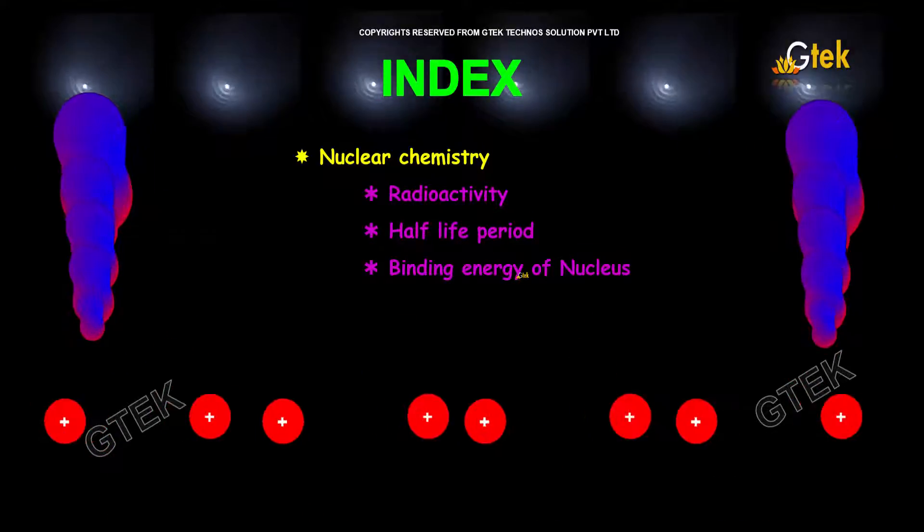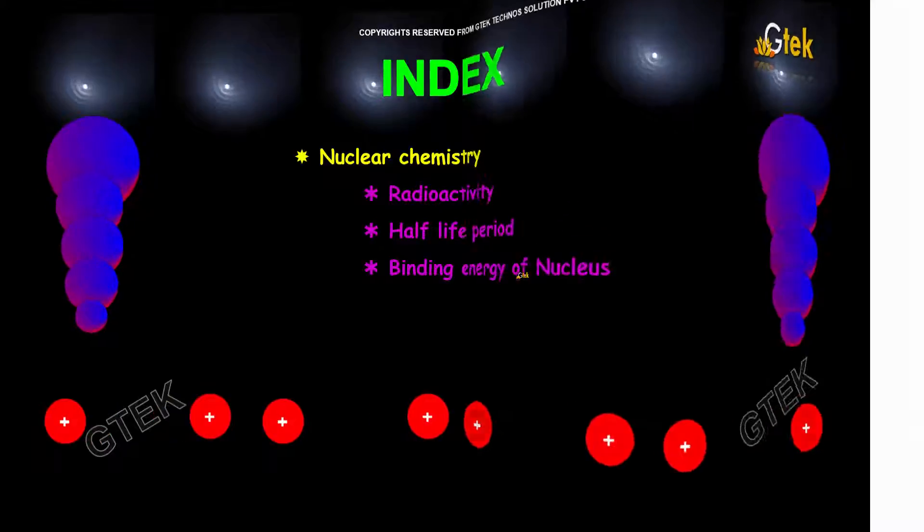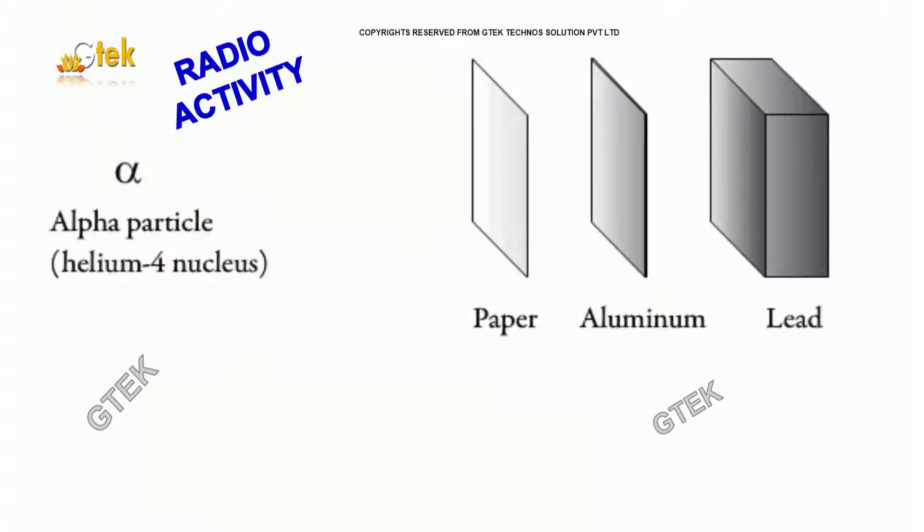These are the areas we are going to cover now. Before starting to think about radioactivity, we should understand the rays available in radioactivity. The first one is the alpha ray, which can be stopped by paper itself, whereas...